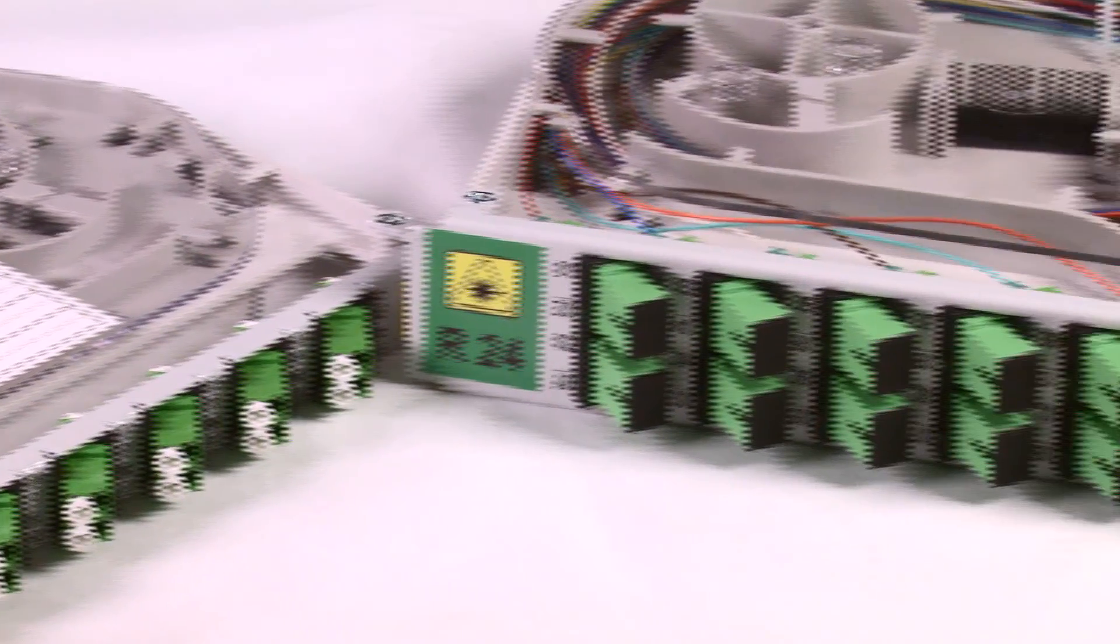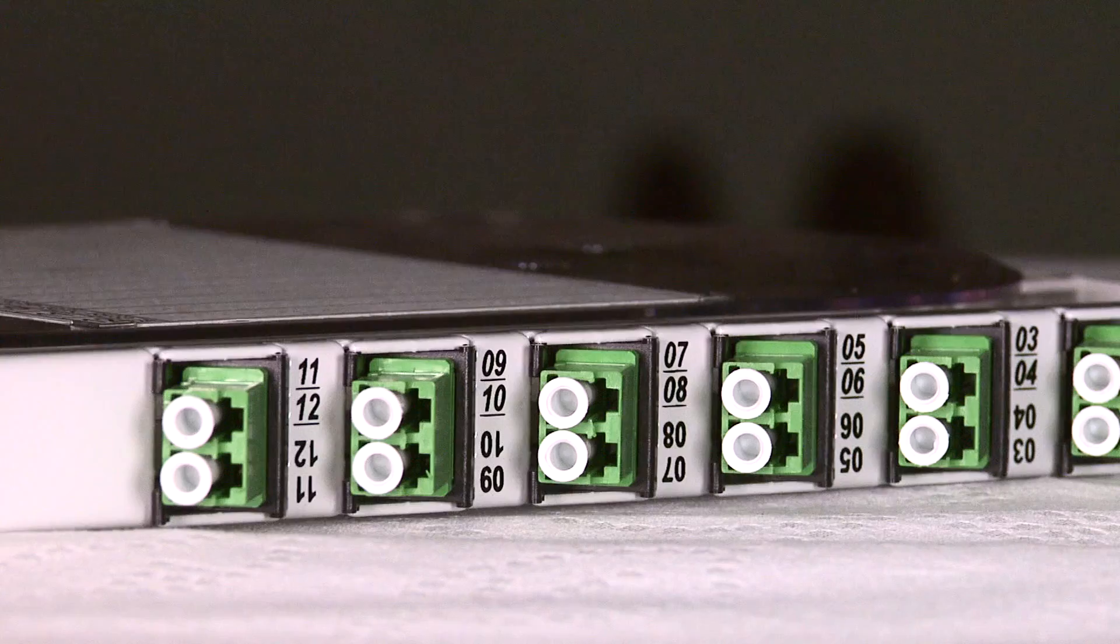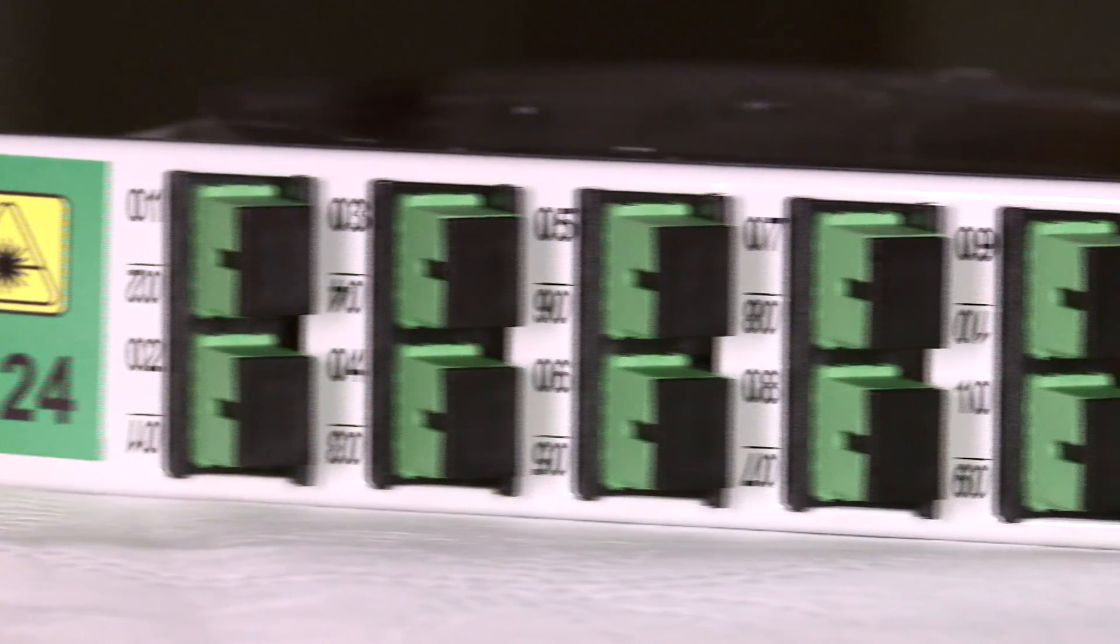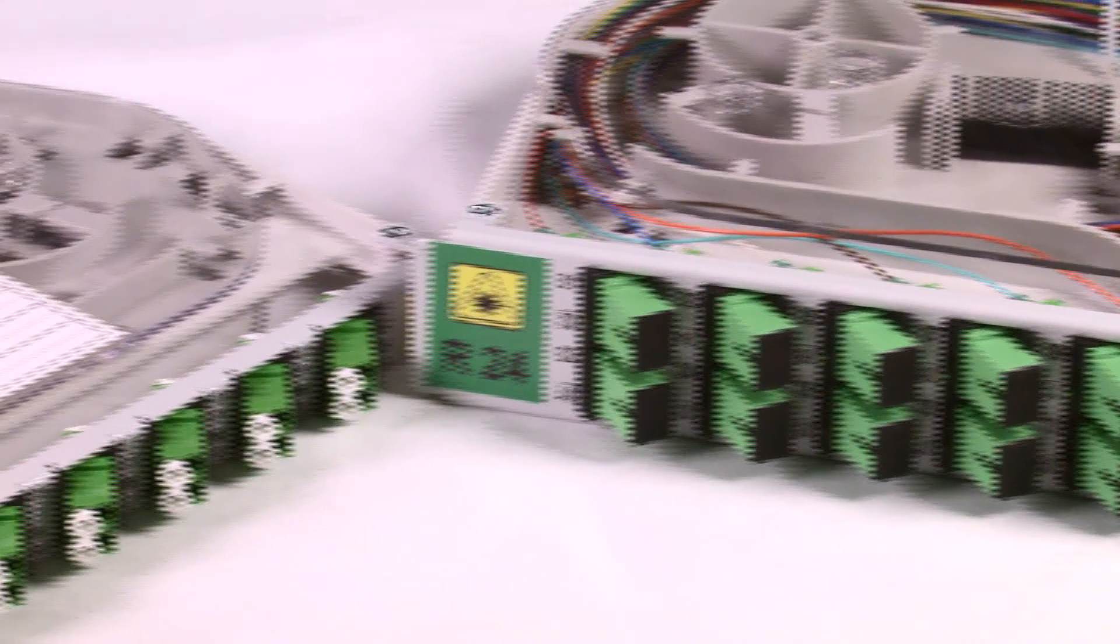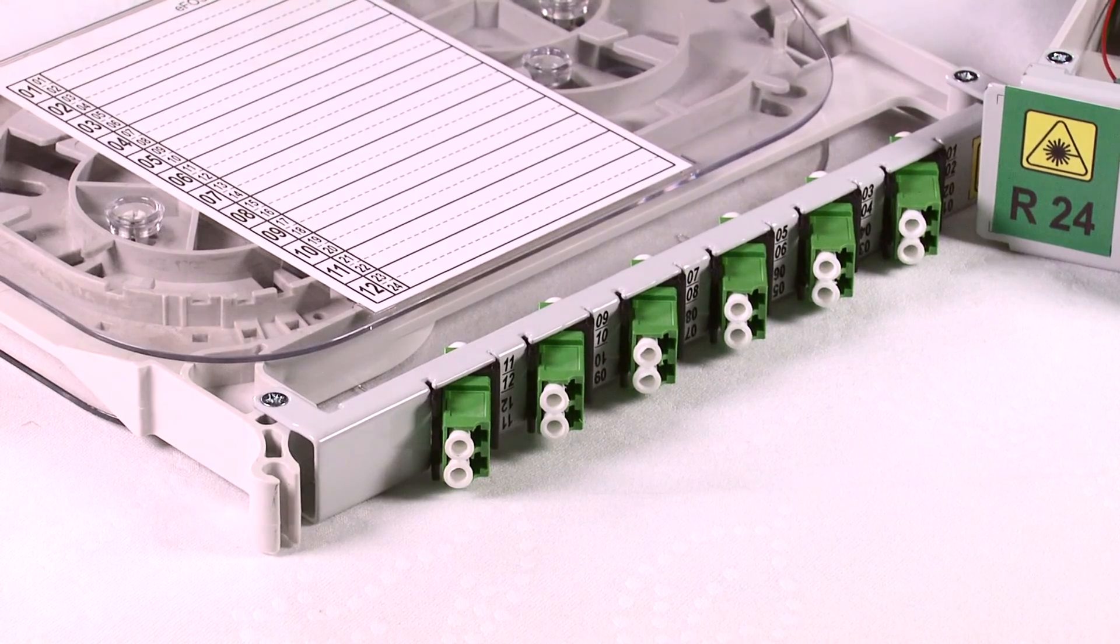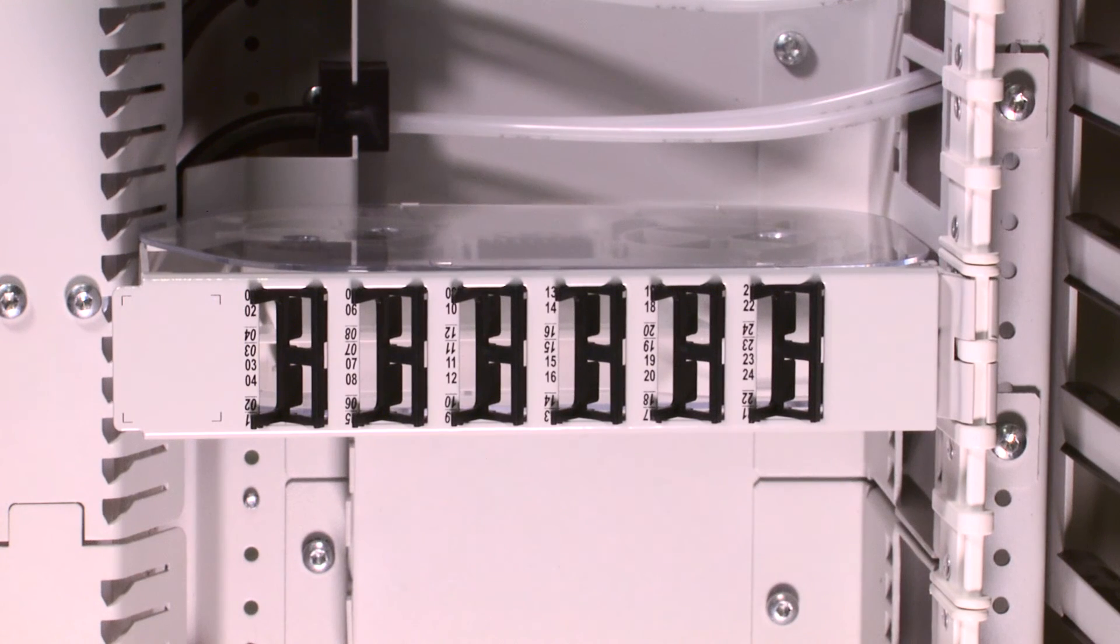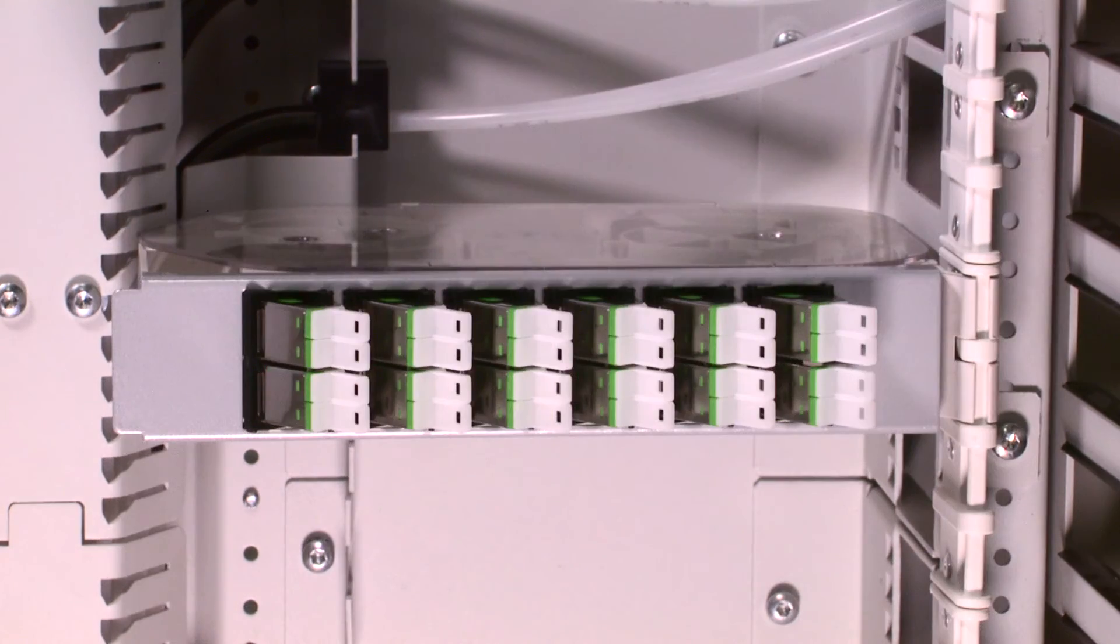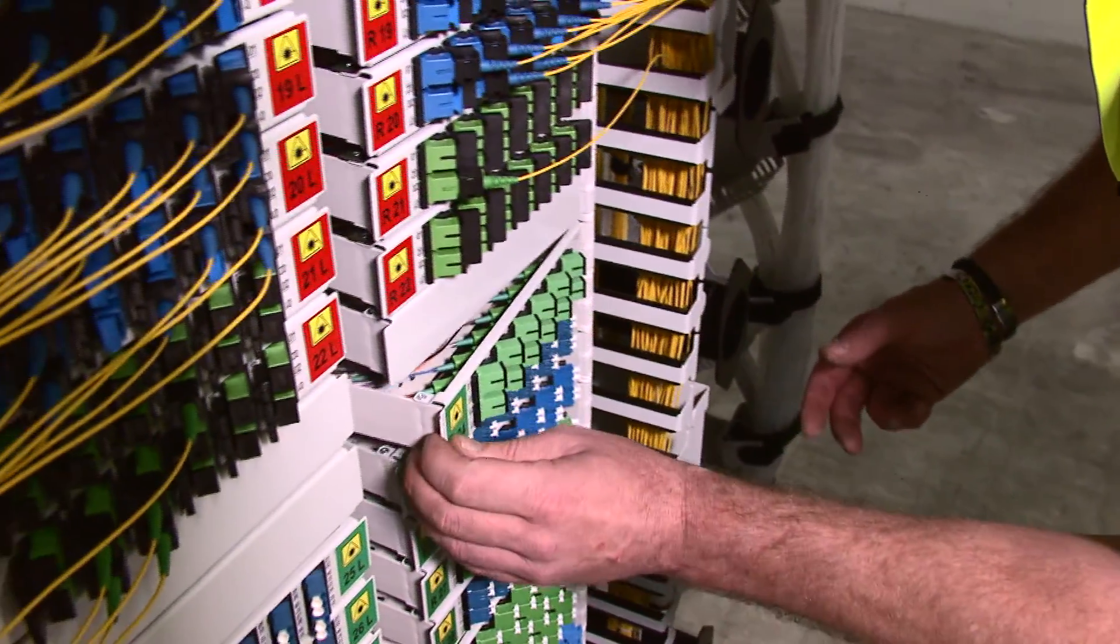The fiber modules are used as combined splice and patch modules and are available in two sizes, corresponding to either 0.5 or 1 height unit. The front plate has recesses into which 45-degree snap lock brackets are fitted. These standardized brackets are suitable for all current coupling types such as ST, FC, SC, LC, and E2000, allowing both highest fiber density and maximum flexibility.